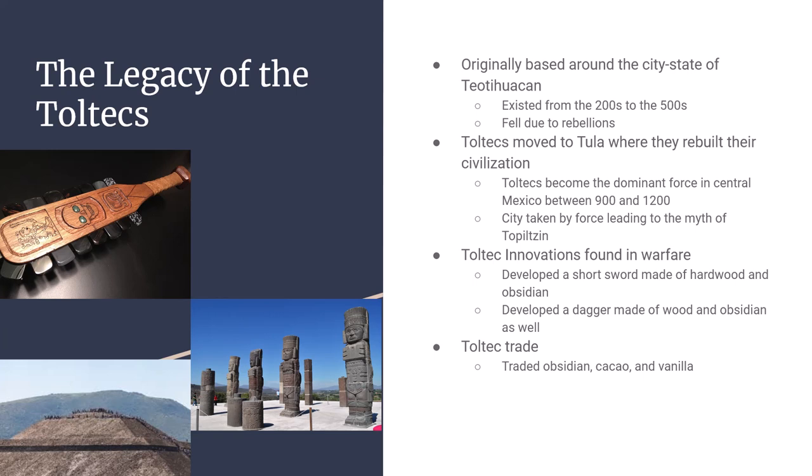The Toltecs became dominant through technical advances in warfare. They discovered obsidian — a volcanic glass — and figured out how to sharpen it into swords and daggers made of wood and obsidian, letting them fight through just about anybody. The Toltecs weren't only about warfare though; they also traded with neighbors, exchanging obsidian, cacao, and vanilla, keeping the best obsidian for themselves.